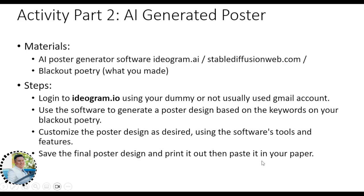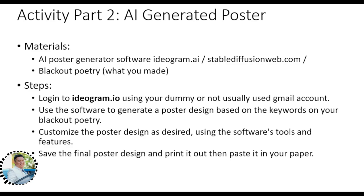Activity Part 2 is the AI-generated poster. Instead of a mood board, we will now use an AI-generated poster. I suggest going to an AI poster generator — ideogram.ai or stable-diffusionweb.com. Log in to ideogram.ai using a dummy or less-used Gmail account, since they send many emails. Use the software to generate a poster design based on the keywords from your blackout poetry, then customize the design using the software's tools. Save the final poster design, print it out, and paste it onto your paper.